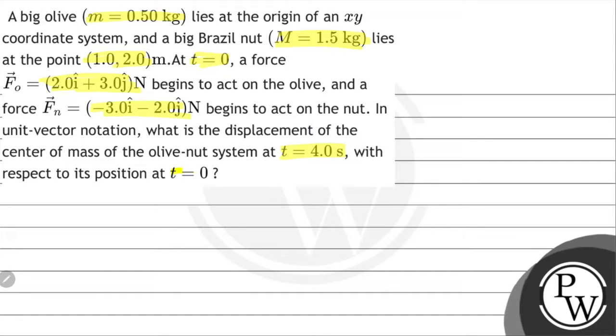So to solve this question, the key concept used is vector and force. The force is given. We will write F_olive plus F_nut, that is olive and nut force, equals minus i cap plus j cap Newtons.